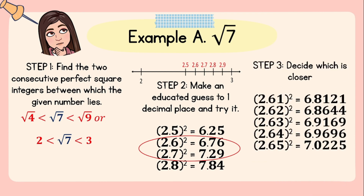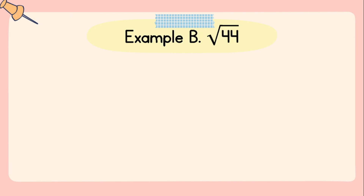Step number three: decide which is closer. Since 7 is closer to 6.76 compared to 7.29, we will now use 2.6 for further estimation to the hundredths place by squaring the numbers 2.61, 2.62, 2.63, 2.64, and 2.65. Notice that 7 is closer to 7.0225 compared to 6.9696. Since 7.0225 is the square of 2.65, the square root of 7 is 2.65 when estimated to the nearest hundredths.